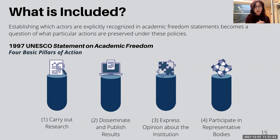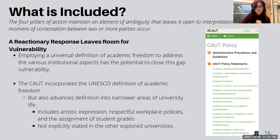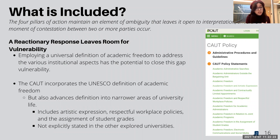All these actions are highlighted within most of the universities that we have explored. However, we recognize as students that this tends to be a reactionary response that leaves room for vulnerability. Employing a universal definition of academic freedom to address the various institutional aspects has the potential to close this gap. The CAUT incorporates the UNESCO definition of academic freedom but also advances the definition into narrower areas of university life, including areas such as artistic expression, respectful workplace policies, and the assignment of student grades. These particular areas we do not see mentioned within other university policies, ultimately leaving a vulnerable gap.